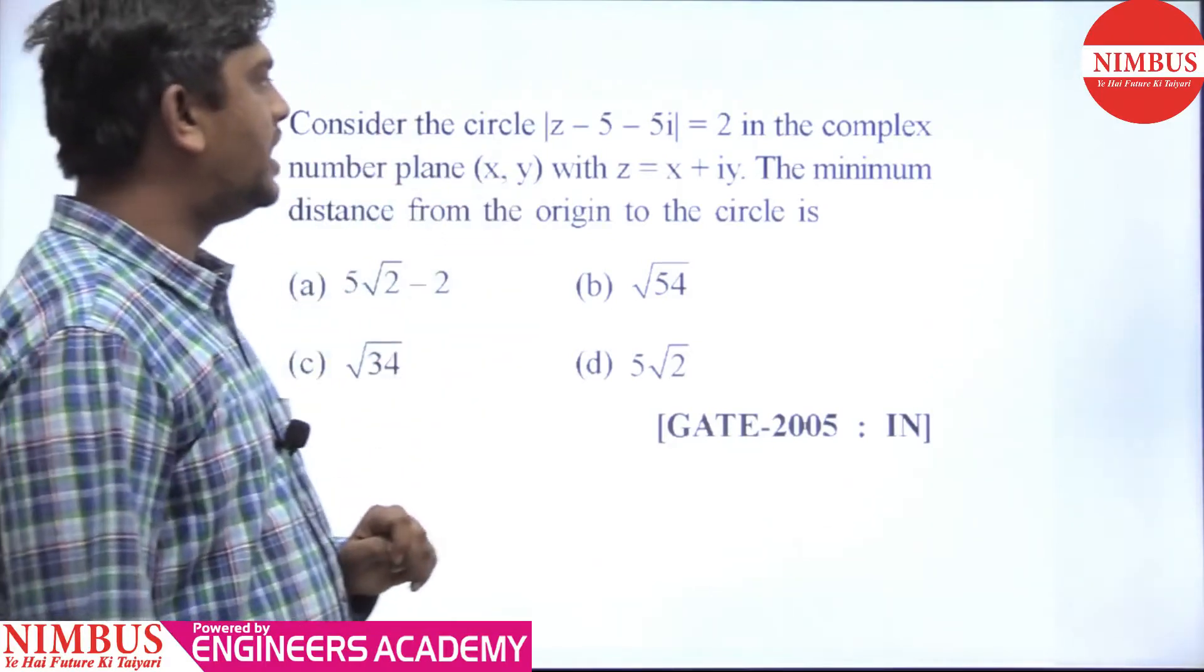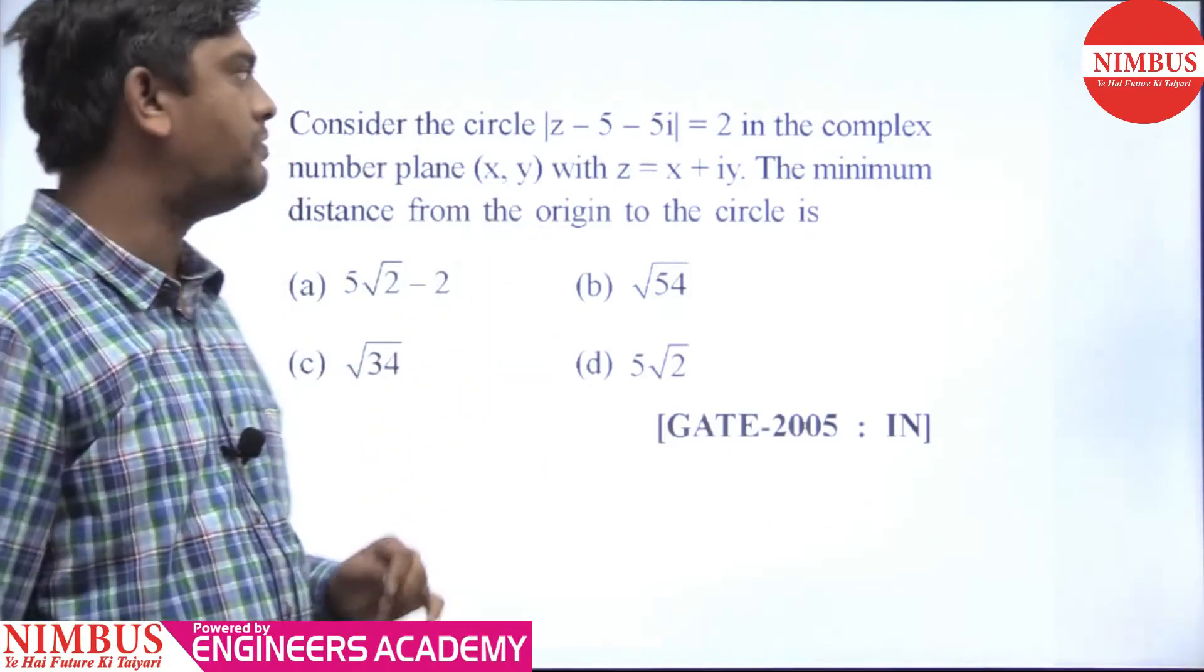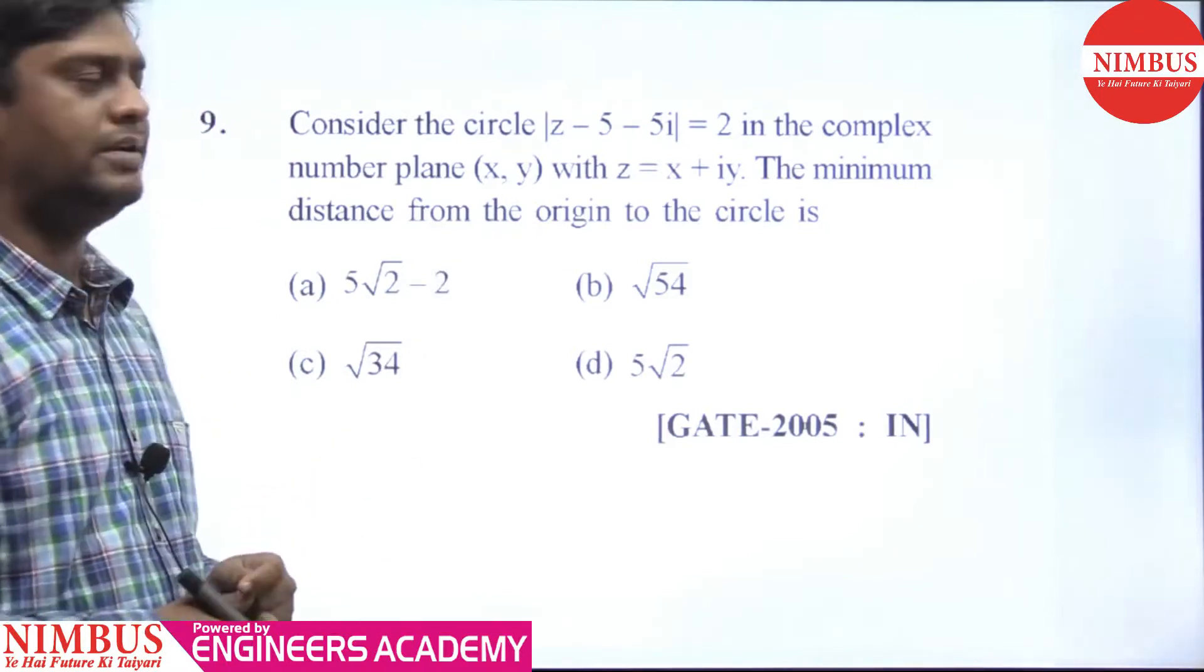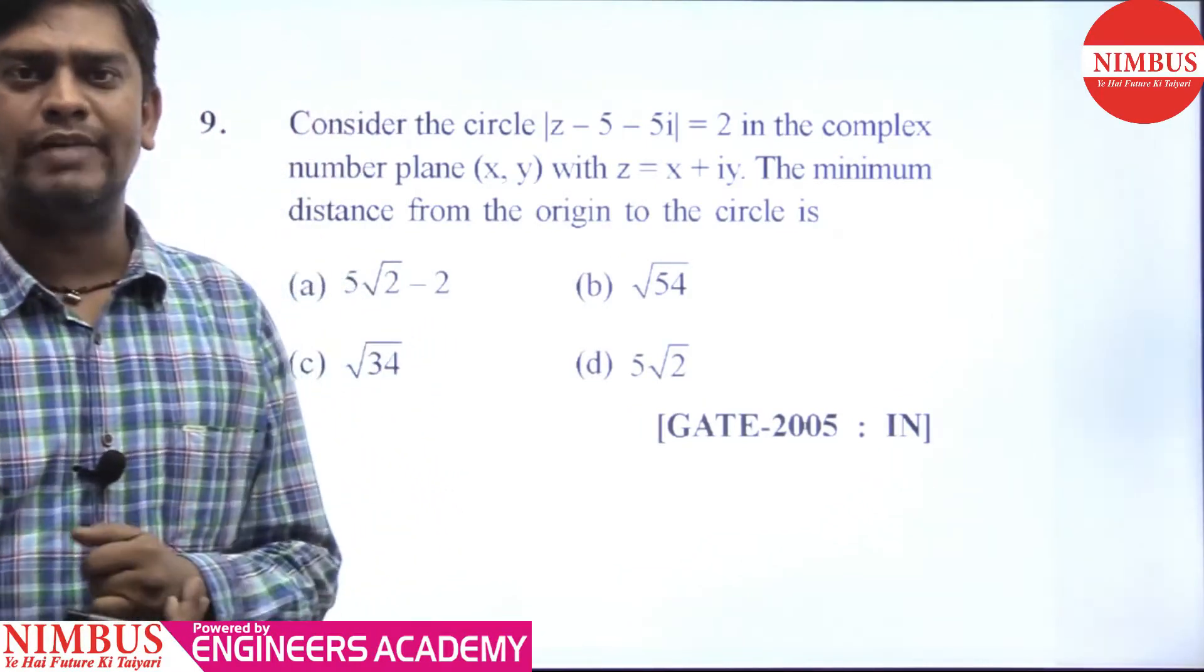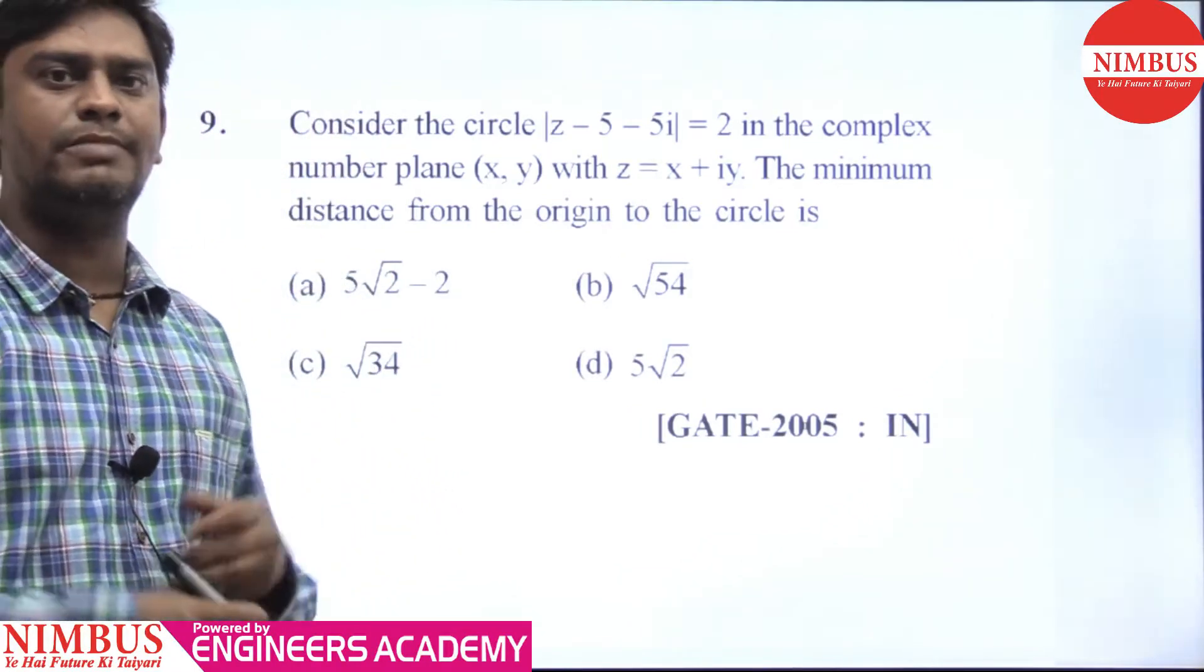Consider this circle |z - 5 - 5i| = 2 in the complex plane (x,y) with z = x + iy. x is the real part and y imaginary part is our complex variable z.